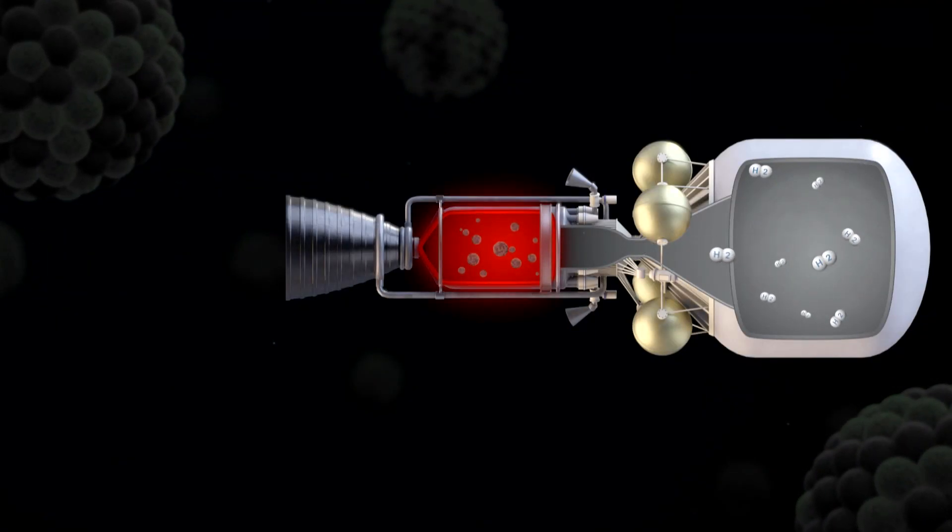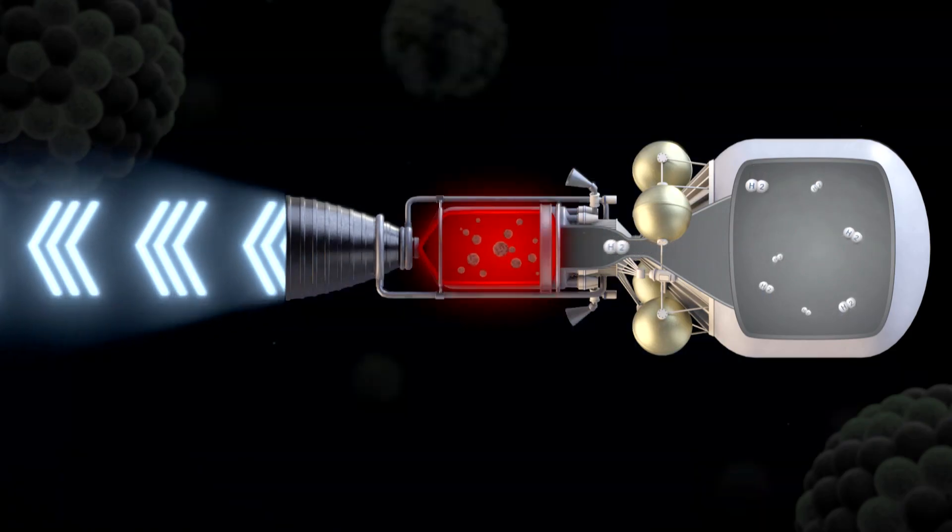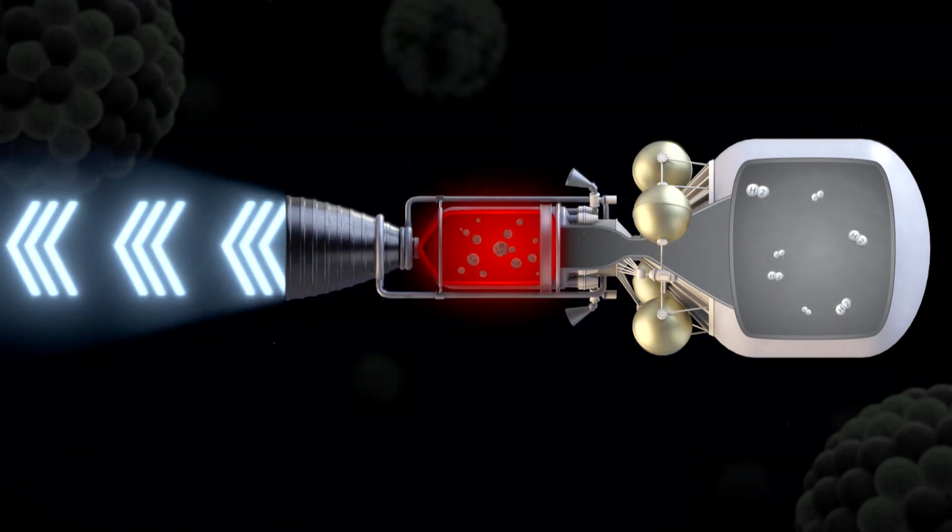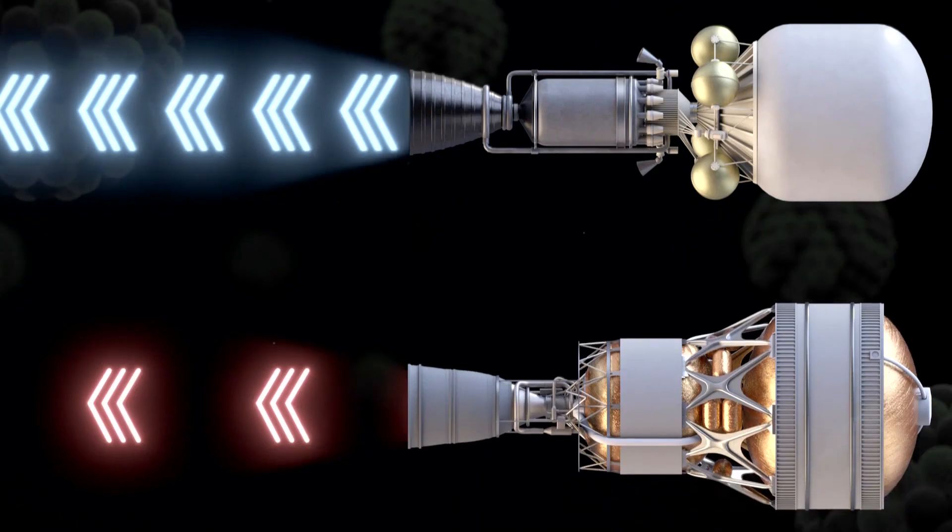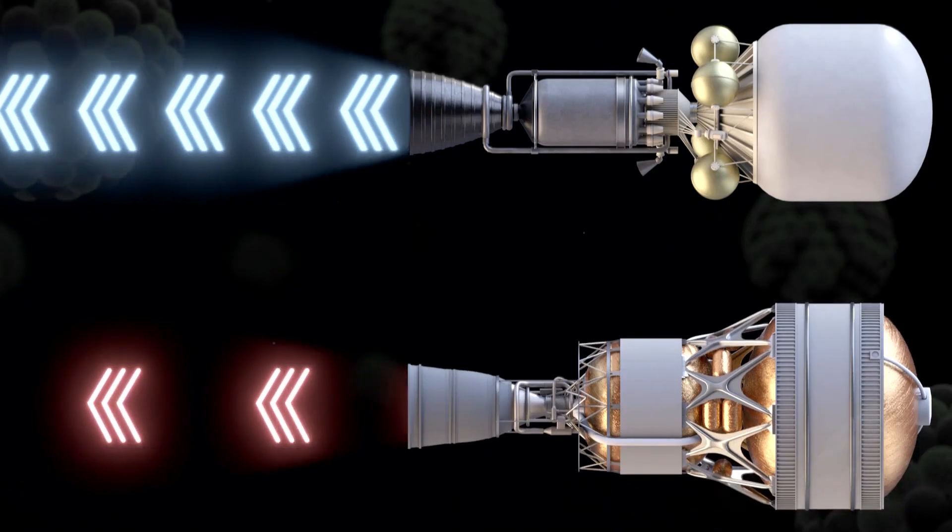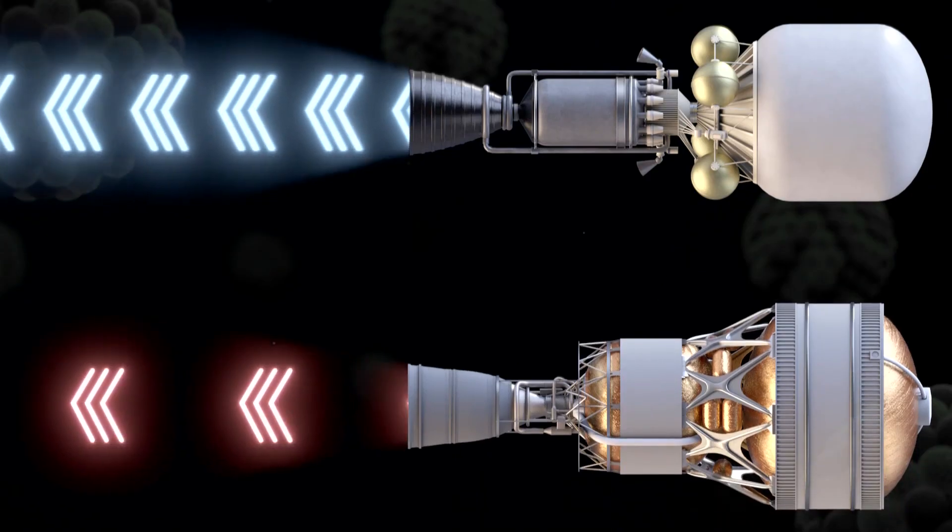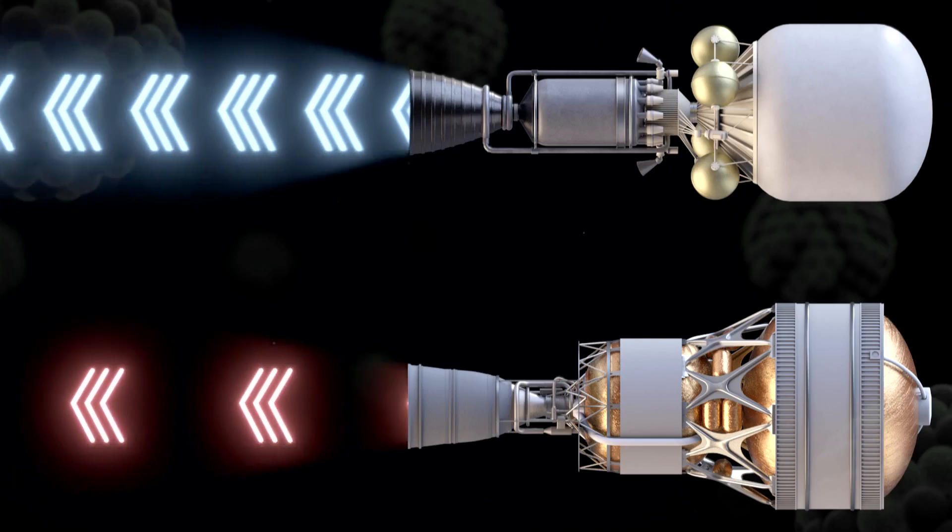Energy from fission is used to heat hydrogen to about 4,400 degrees Fahrenheit. This hydrogen is then accelerated through a nozzle, resulting in a propellant efficiency roughly twice that of the best chemical rocket engines.